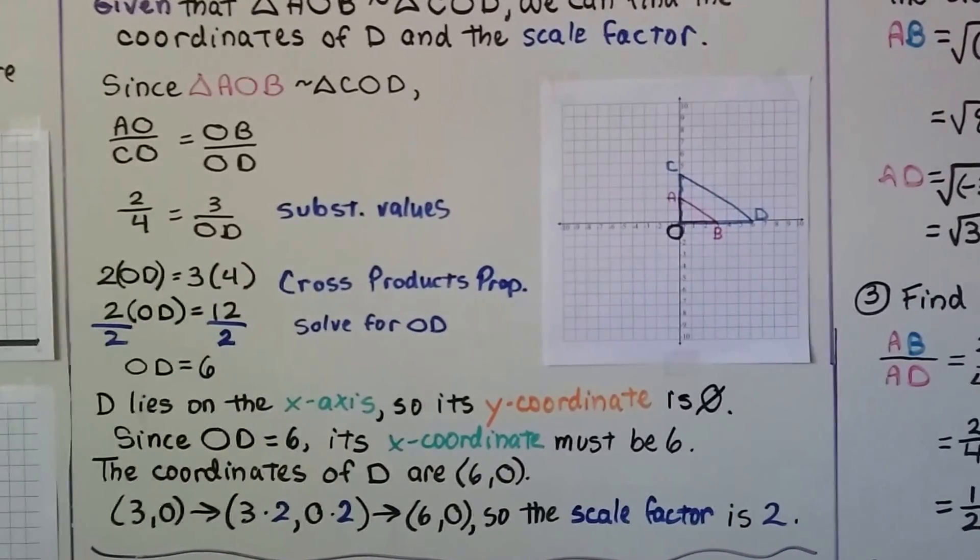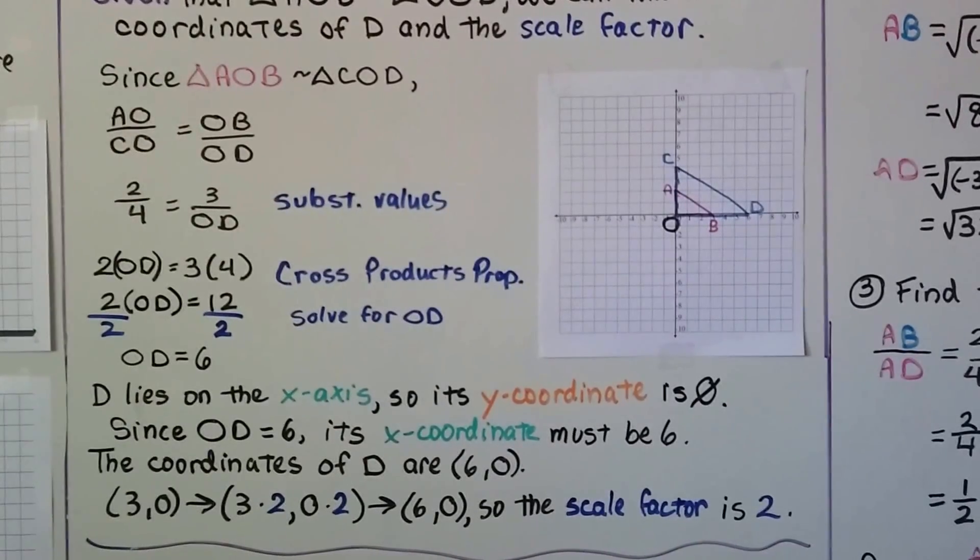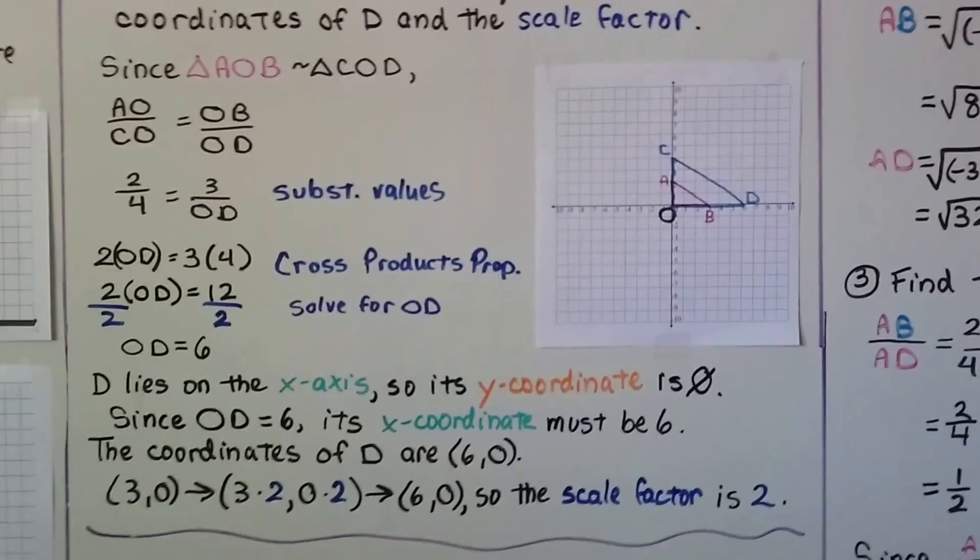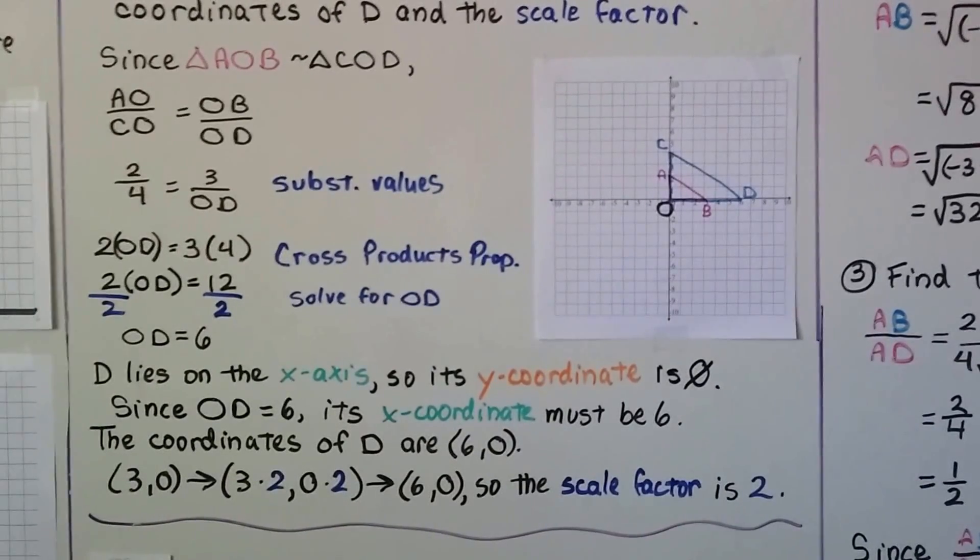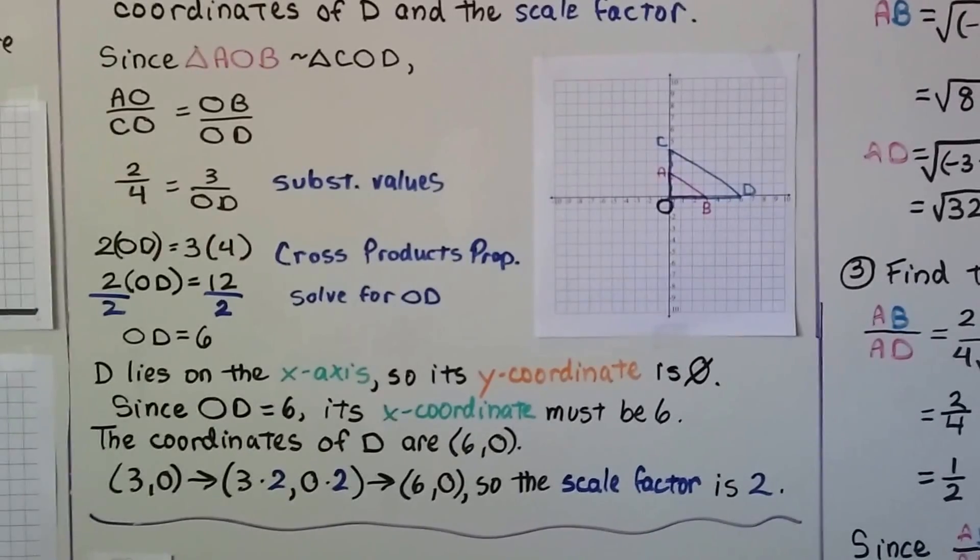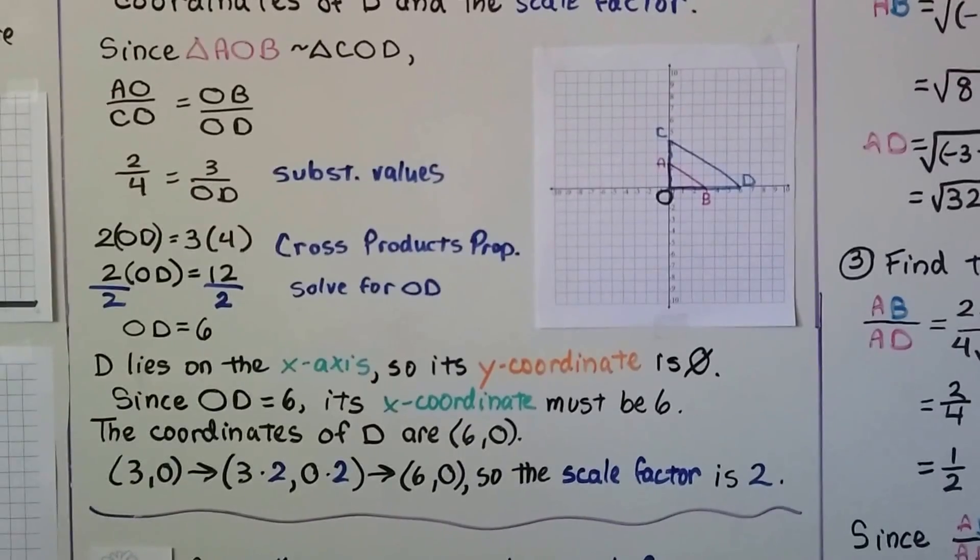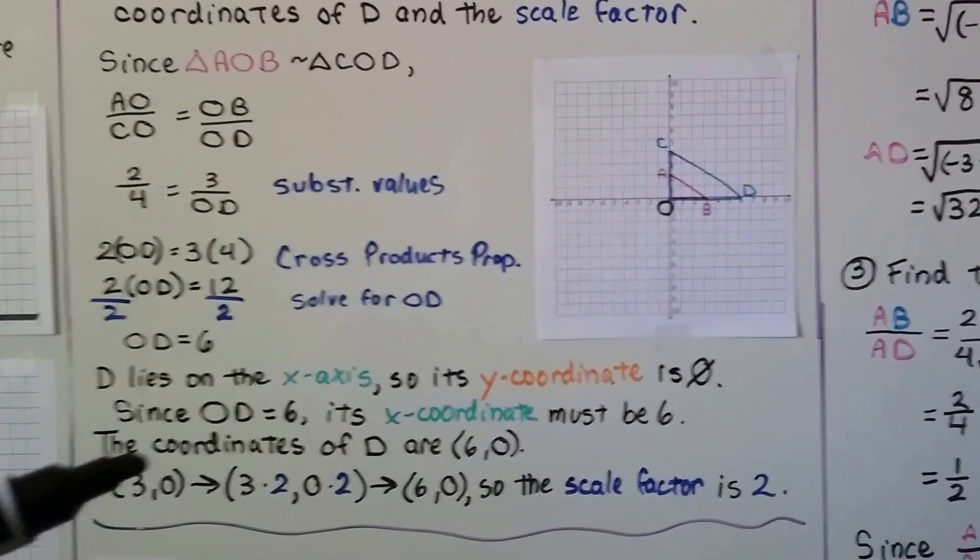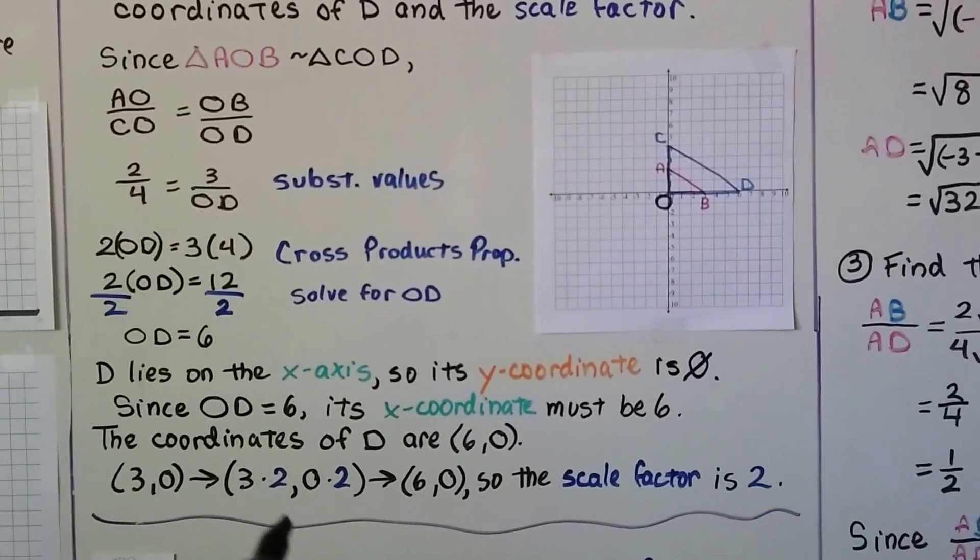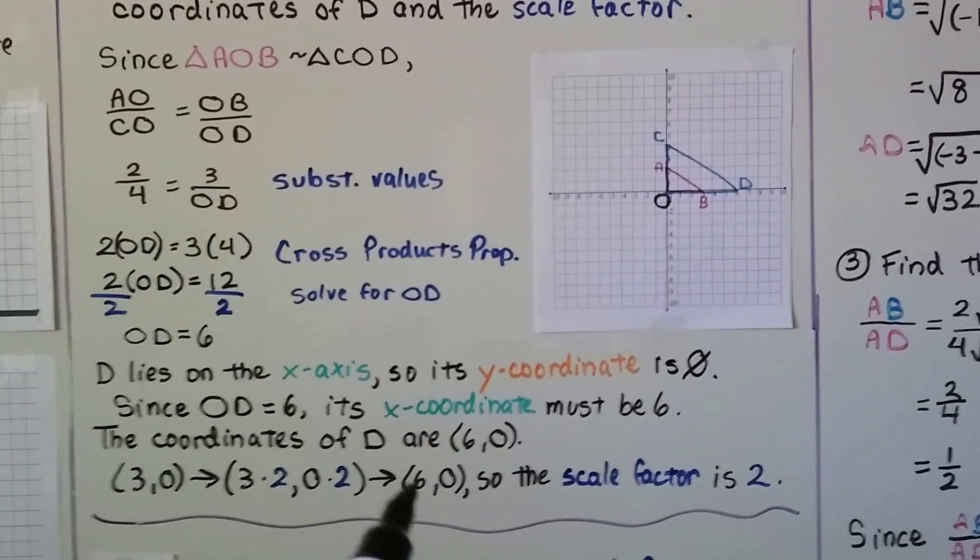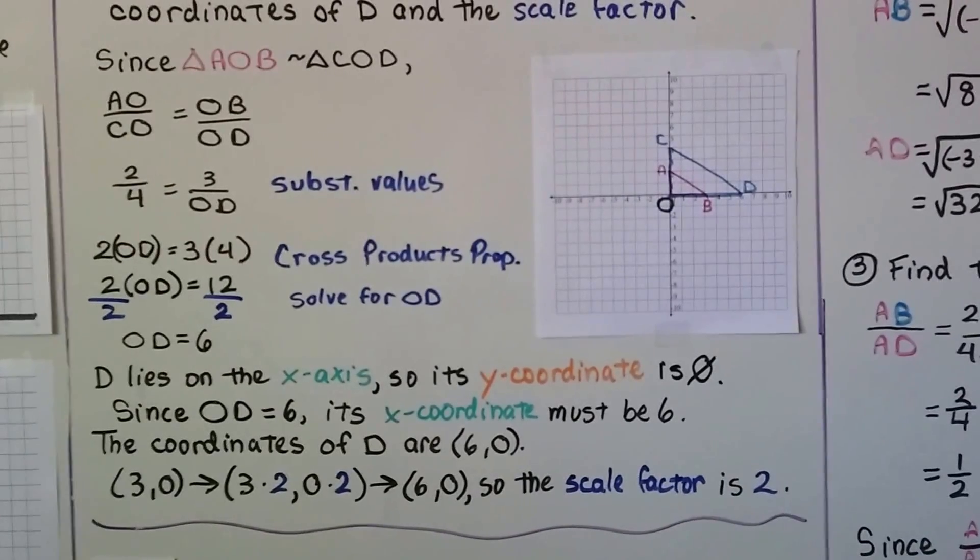We divide both sides by the coefficient two and find out that the distance OD is six. D lies on the x-axis, so its y-coordinate is zero, and since OD equals six, its x-coordinate must be six. The coordinates of D are (6,0). If we take the (3,0) ordered pair and multiply both x and y by 2, we get (6,0). So we know the scale factor is two.